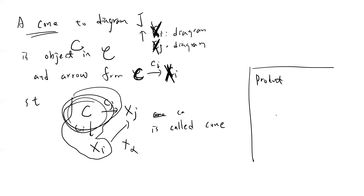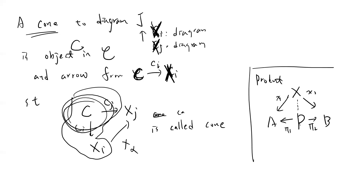Let's talk about an example — otherwise nobody understands what I'm talking about. One example is called a product. A product means that if somebody gives you a diagram A and B, the product is an object P, and you define two maps Pi_1 and Pi_2 from P. Such that if you have any other object X with two maps X_1 and X_2, then there's a unique morphism from X to P. This is the definition of product. So in the product, my diagram is just two objects A and B, and P is just the cone — P is the apex object sending out arrows to A and B.